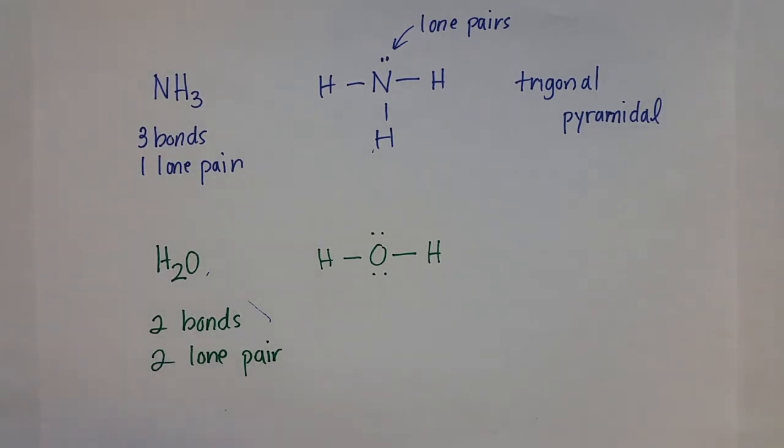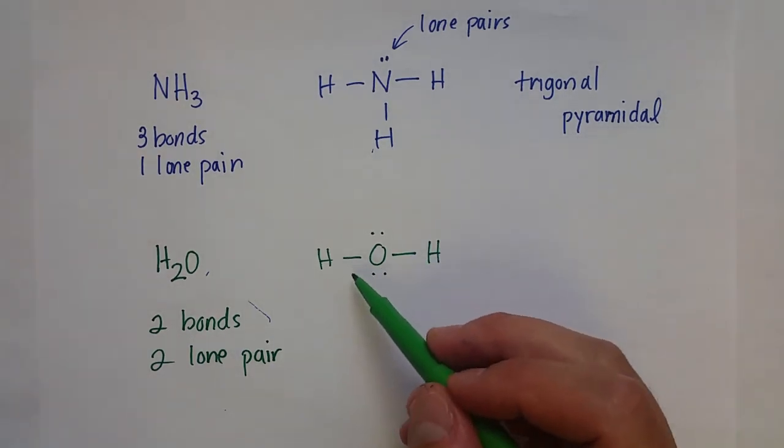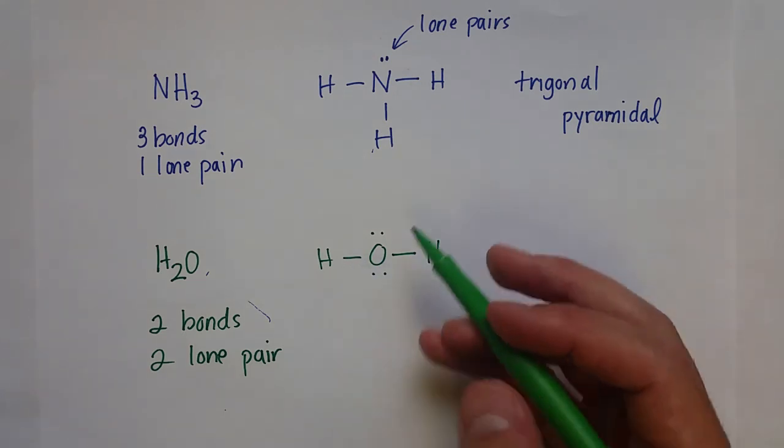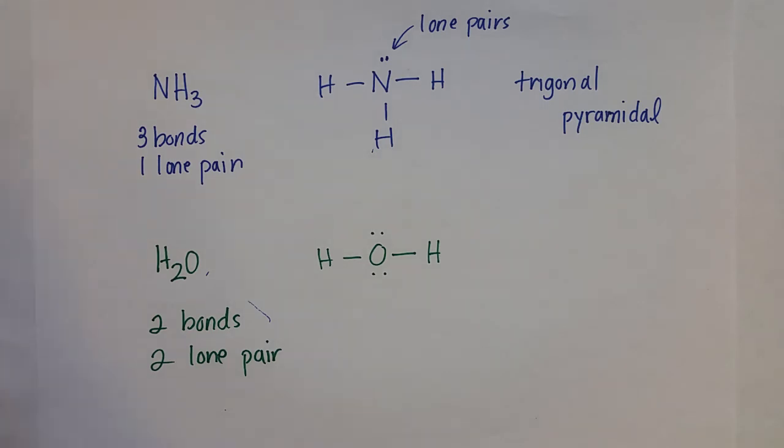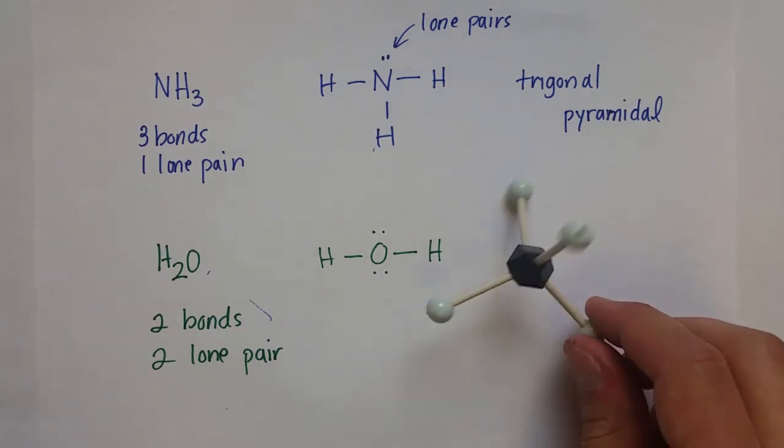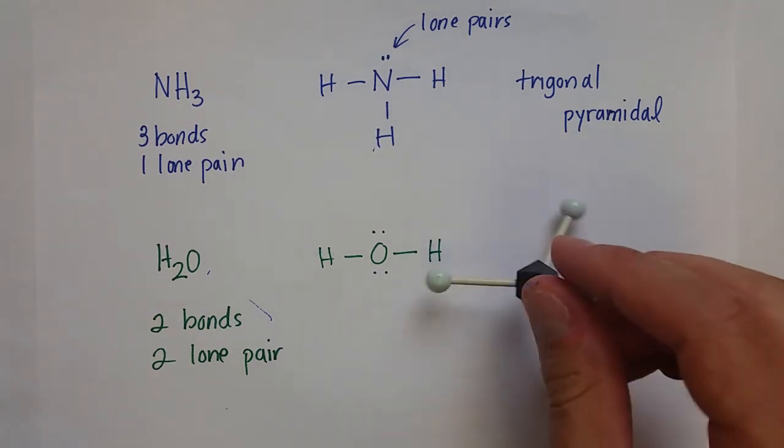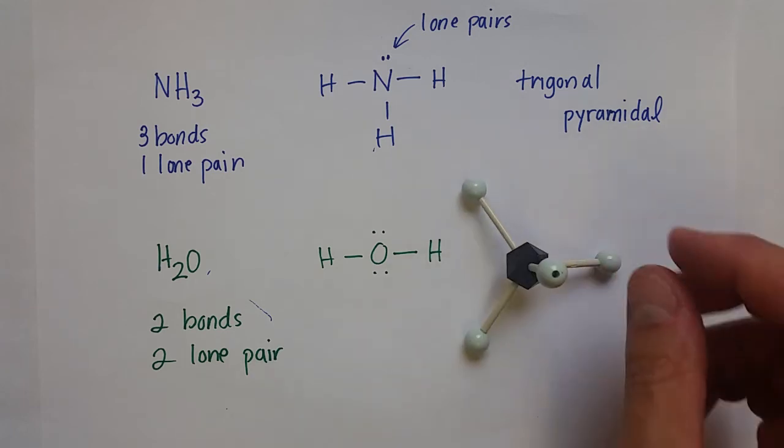And so that, of course, is going to impact this geometry. If we just look at the structural formula here, we might think that this is a linear molecule, and it is certainly not. The four electron groups are going to set up a tetrahedral geometry, just like methane did and just like ammonia did.